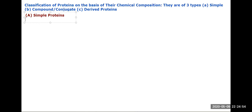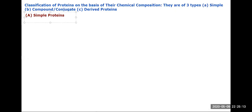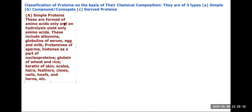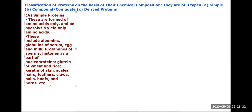Simple proteins are those proteins which are made up of only amino acids. These are formed of amino acids only, and on hydrolysis they yield only amino acids.